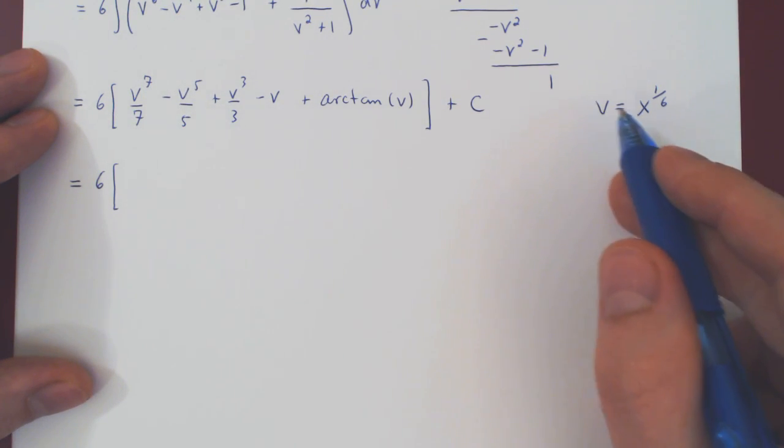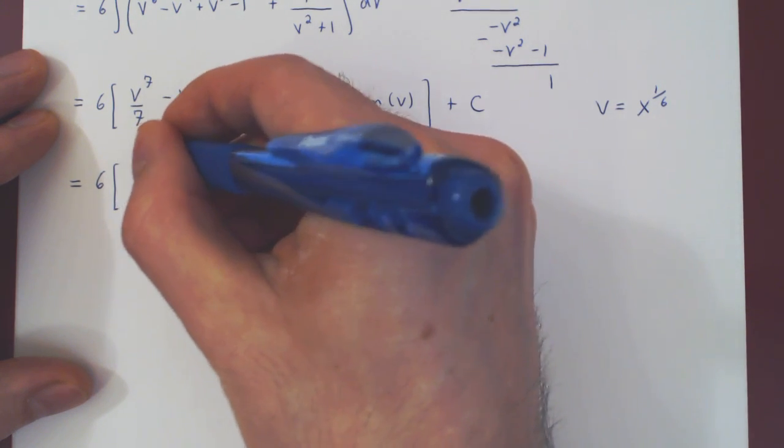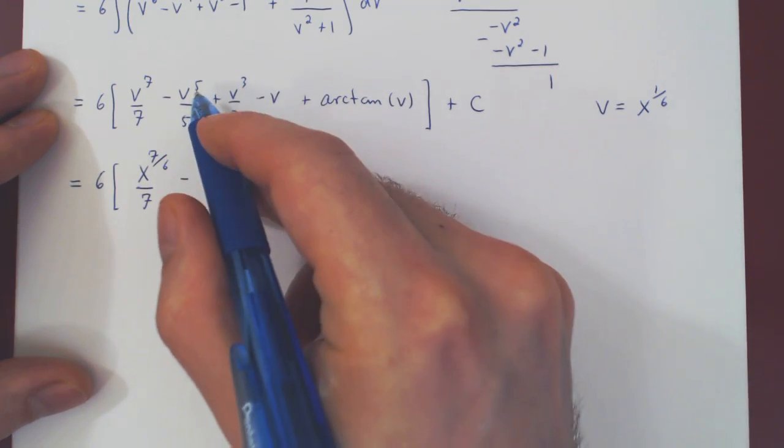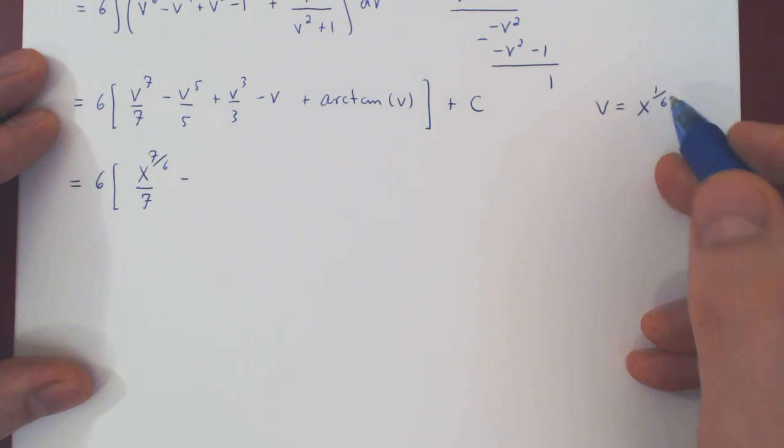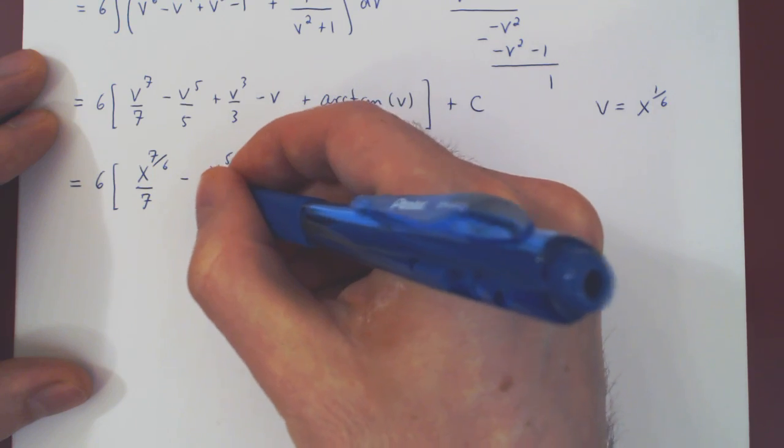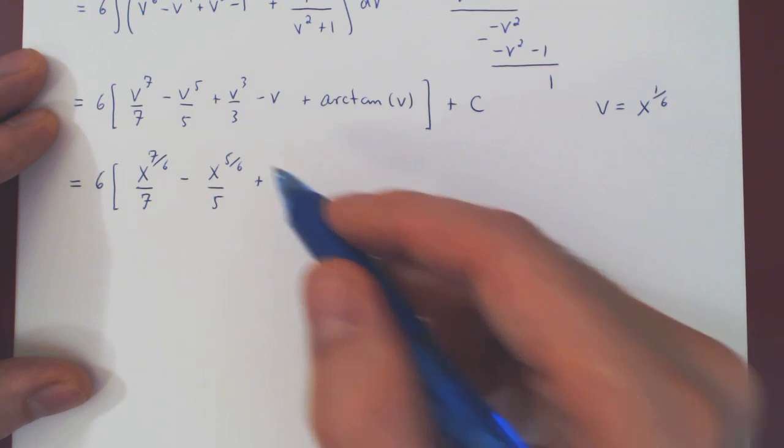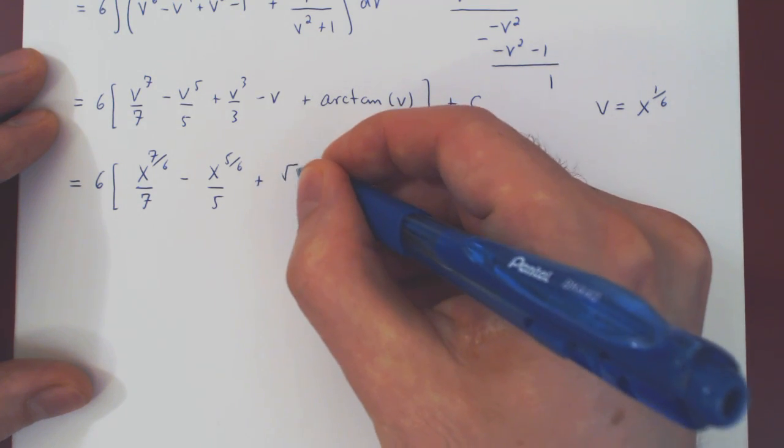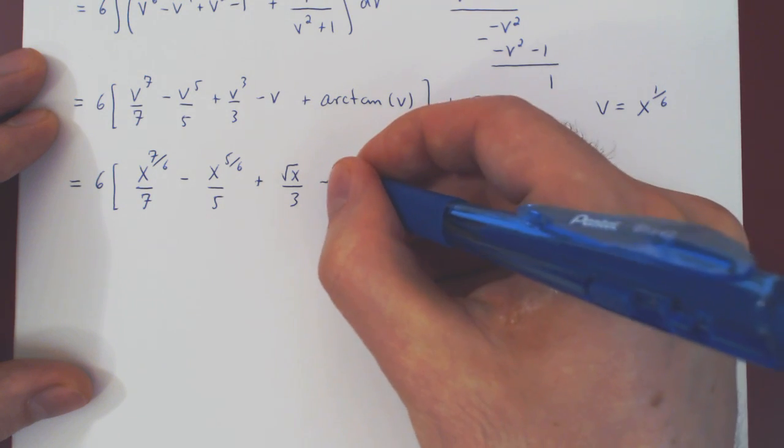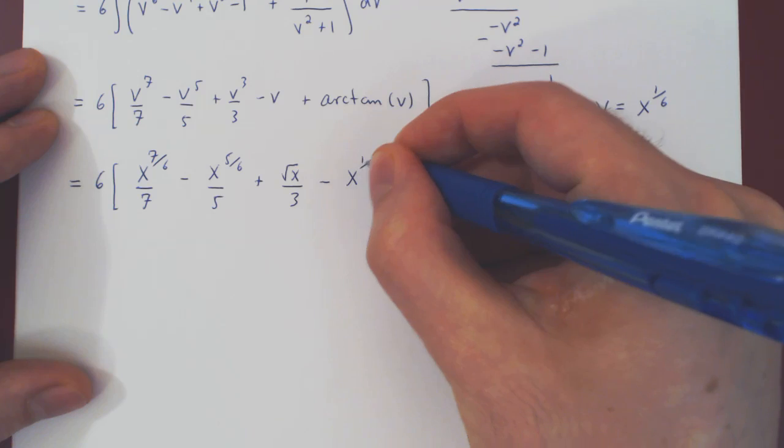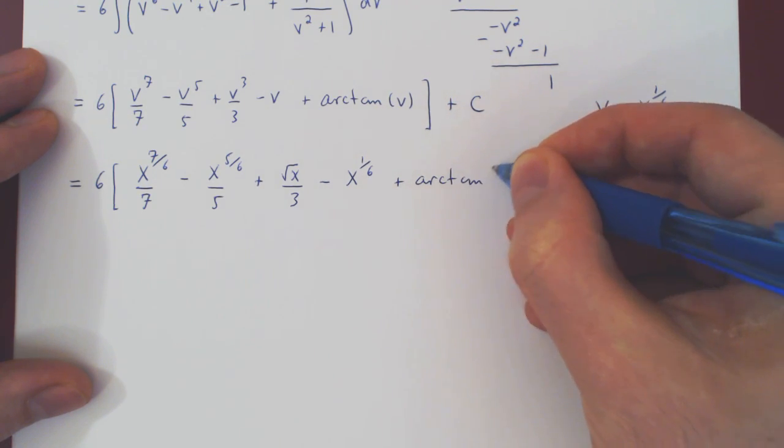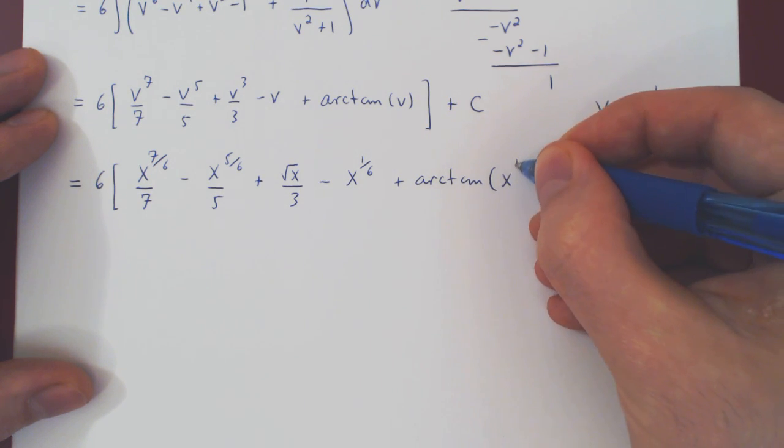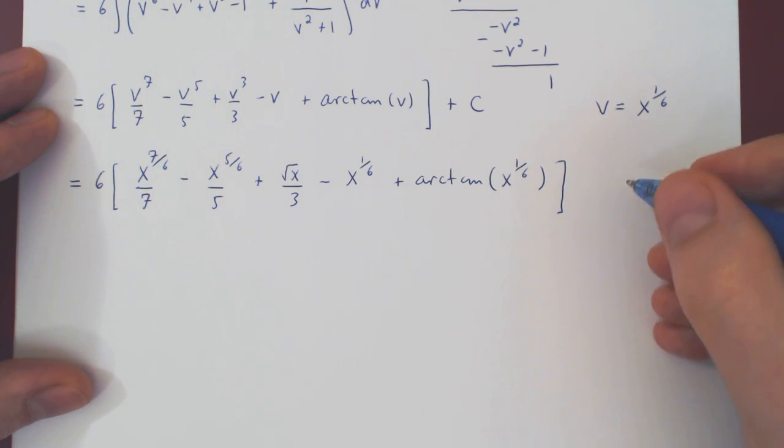So if you take the seventh power of v you will have x to the 7 over 6 over 7, minus if you take the fifth power of v you will have x to the 5 over 6 over 5, plus here this will simplify nicely. Take the third power of v, you'll have 3 over 6, but 3 over 6 is 1 half. You can either leave the 1 half in the exponent or simply write the root of x, either way is fine. Minus v, well that's simply x to the 1 over 6, plus the arctangent of v which is again x to the 1 over 6. We close our parenthesis and we're left with of course plus c.